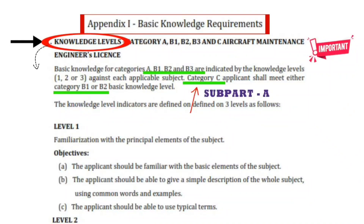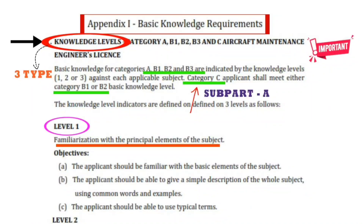The knowledge level in the exam will be of three types. Level 1 is familiarization with principal elements, meaning the applicant should know what the subject is about, be able to describe the whole subject in simple terms, and use typical terminology of that subject.